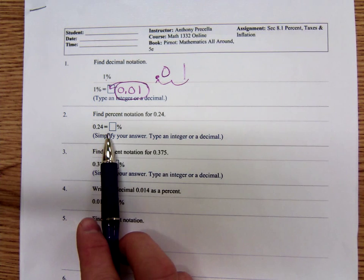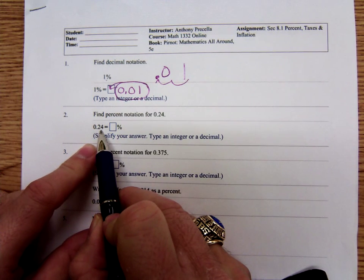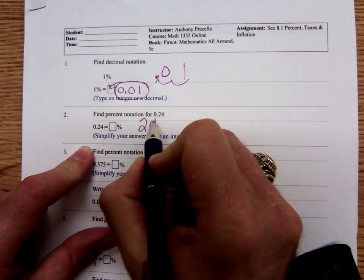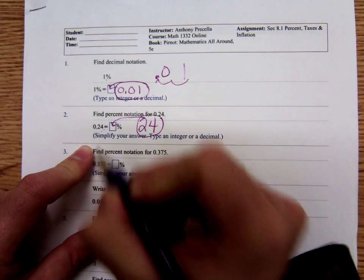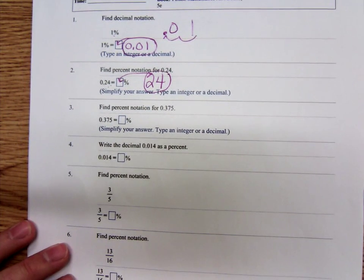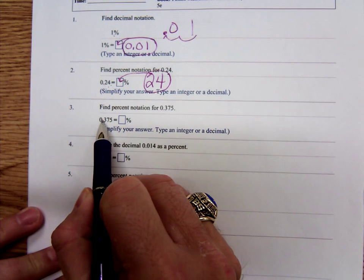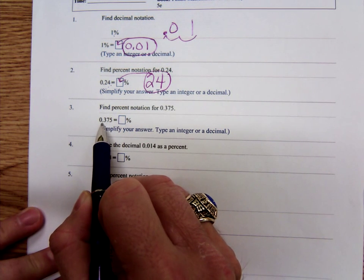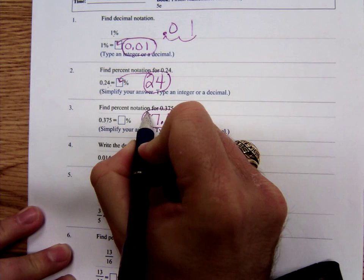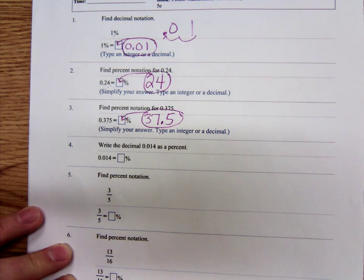To go the other way, you move the decimal point two places to the right. Point two four can be written as, if you move the decimal point two places to the right, that would be 24%. Here's another one where we're going to write it as a percent. We have the decimal point zero point three seven five. To go from decimal to percent, you move the decimal point two places to the right. So point three seven five is the same thing as 37.5%. So point three seven five, move the decimal point two places to the right, 37.5%.